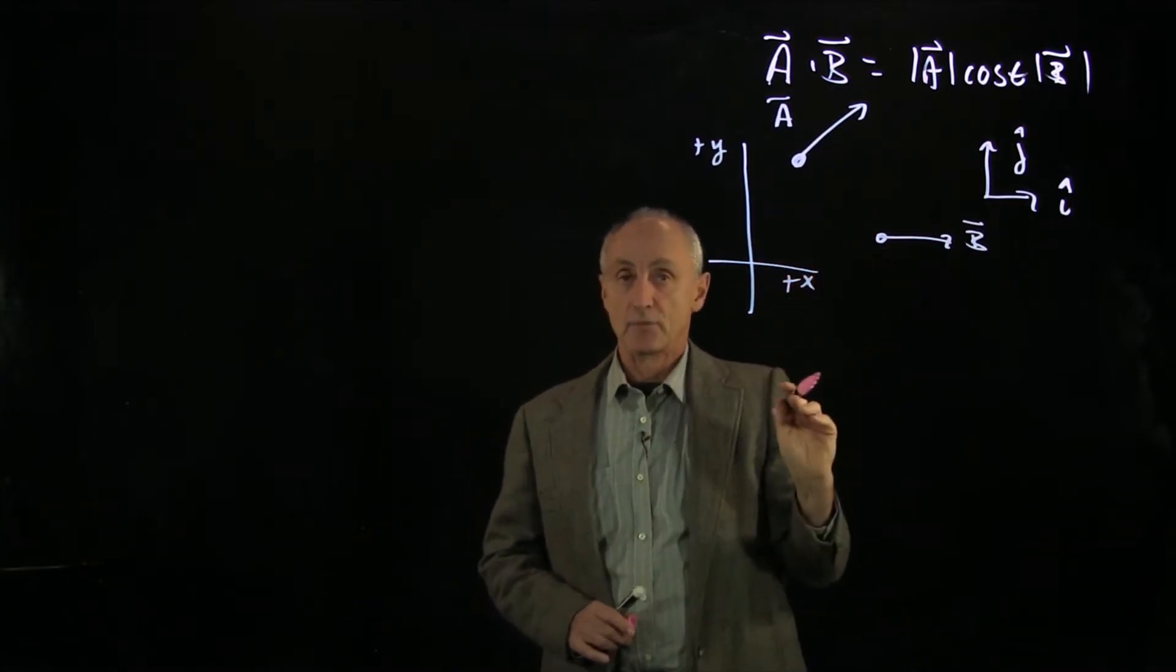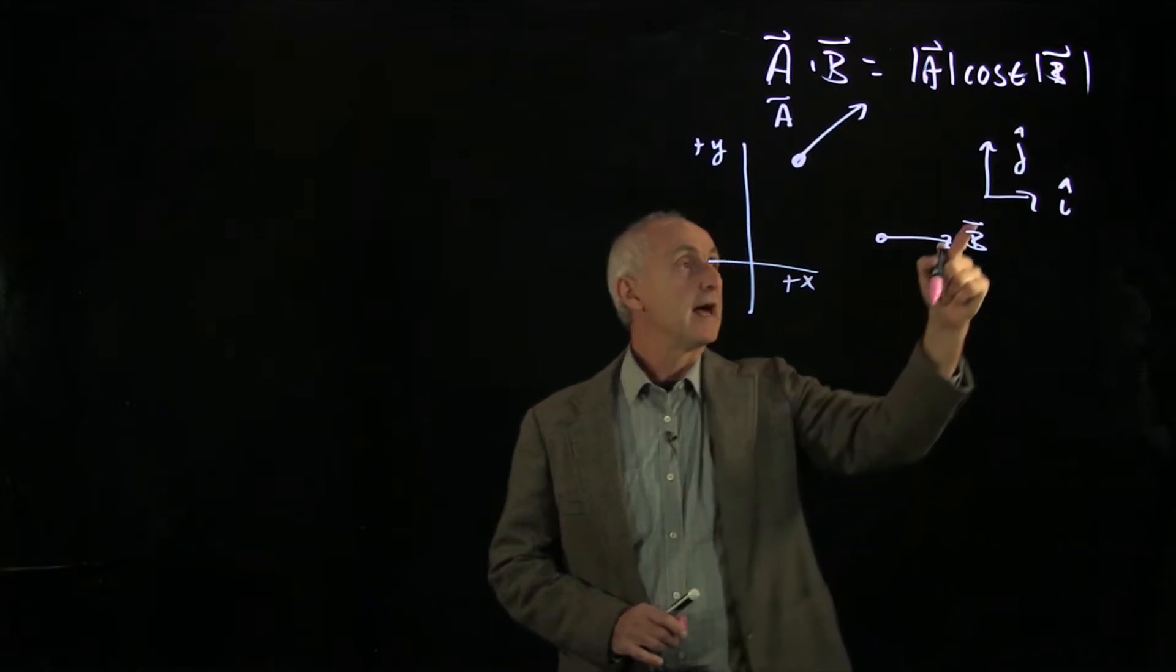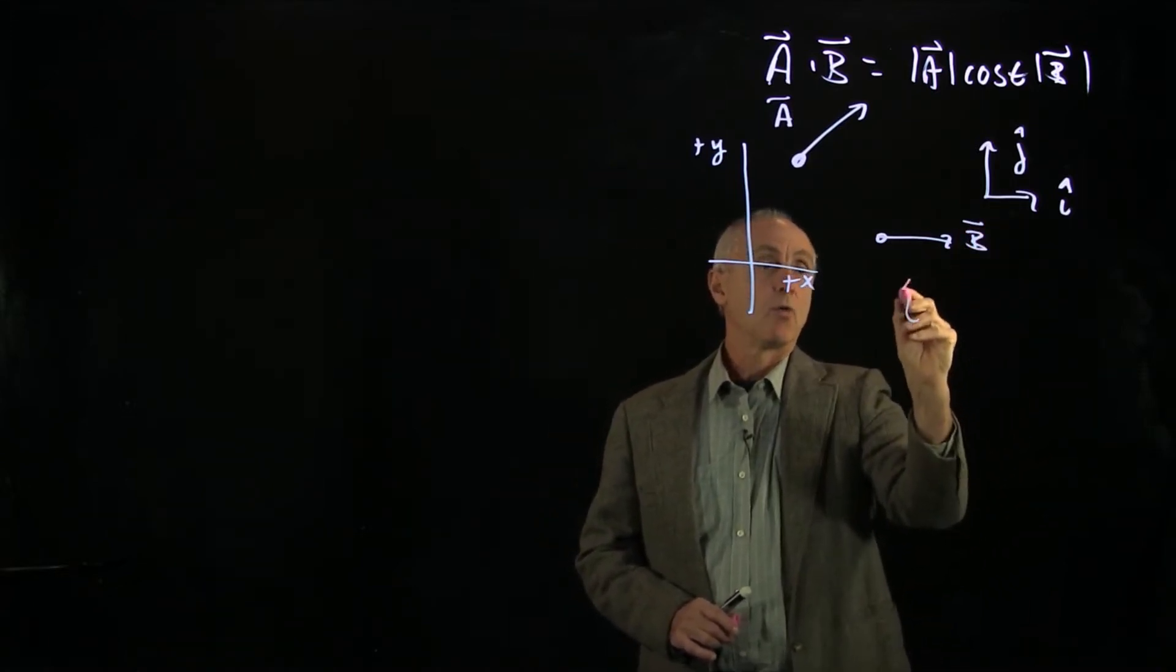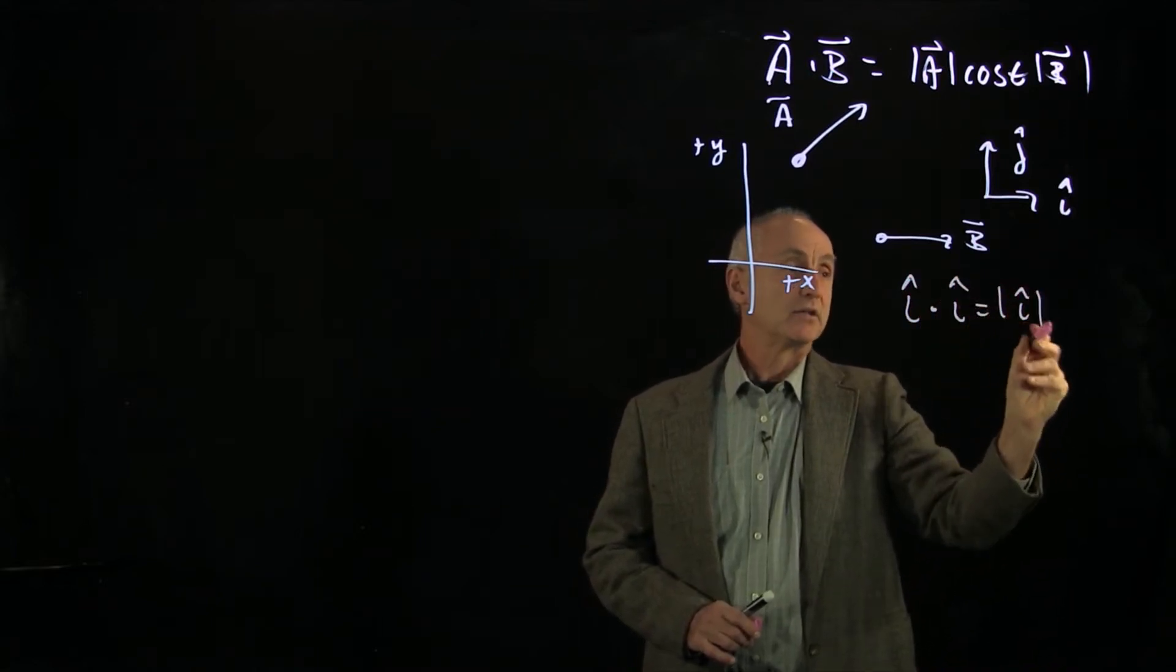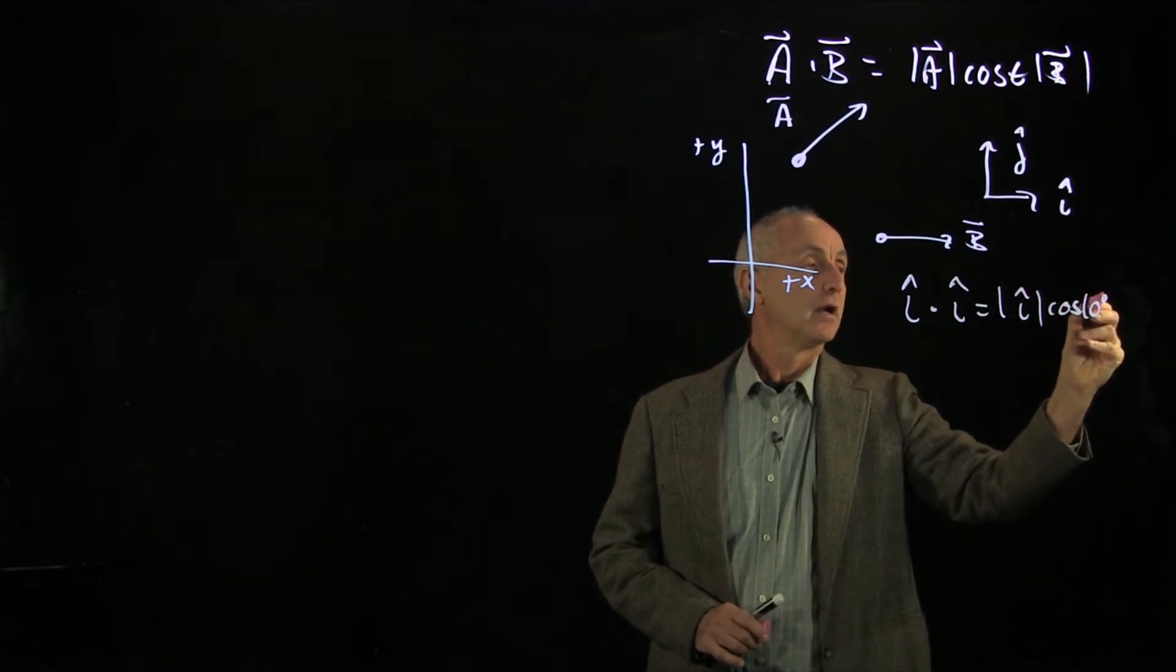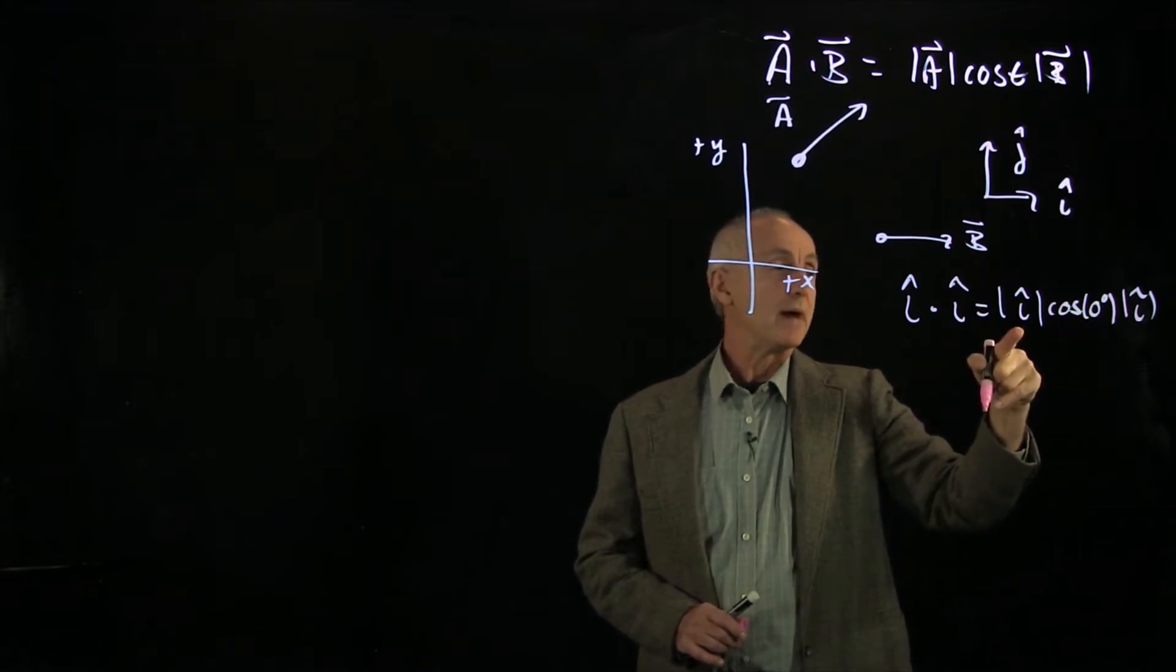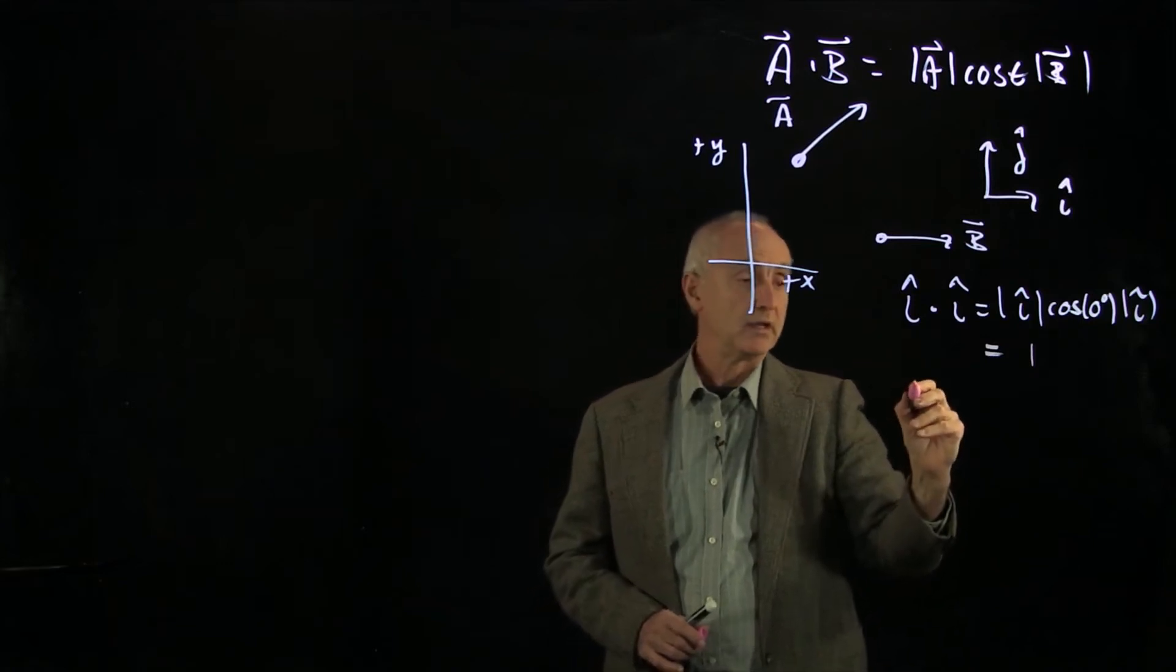So how do we calculate the dot product? The first thing that we want to look at is our unit vectors. What are the dot products of unit vectors? If we take i hat dot i hat, that's the magnitude of i hat times cosine of the angle 0 times the magnitude of i hat. And cosine of 0 is 1, and the magnitude of unit vectors are 1. So when you dot product the unit vector with itself, you get 1.